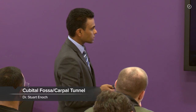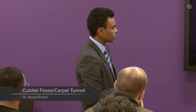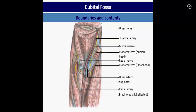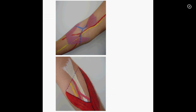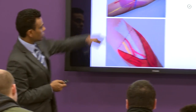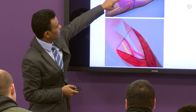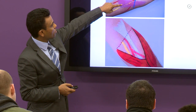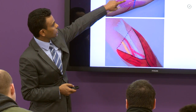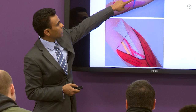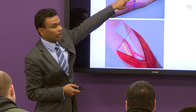Cubital fossa — that's a schematic representation. Laterally you have the brachioradialis, medially you have the pronator teres. So this is the left and the right cubital fossa: brachioradialis, pronator teres, median nerve, brachial artery, cephalic vein.